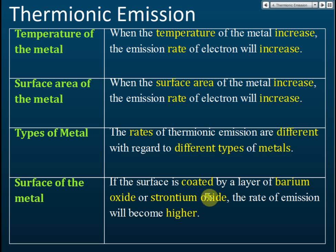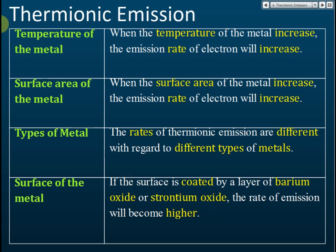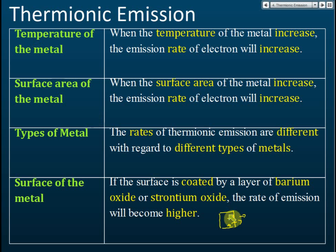For the surface coating: we coat a metal with another material such as barium oxide or strontium oxide, because these can release electrons more easily. You might ask, why not just use a piece of barium oxide directly? It can release electrons easily, but the problem is it's very difficult to heat barium oxide.